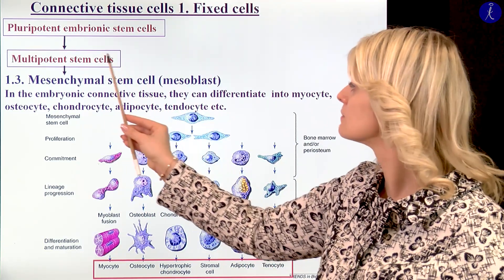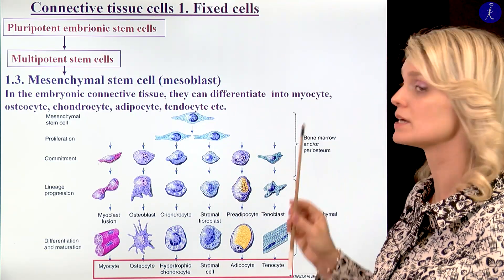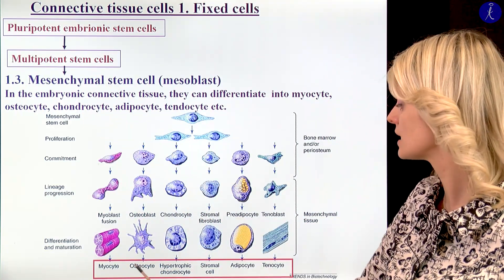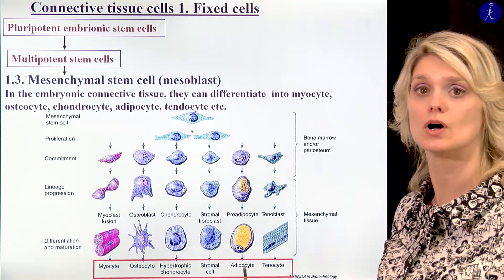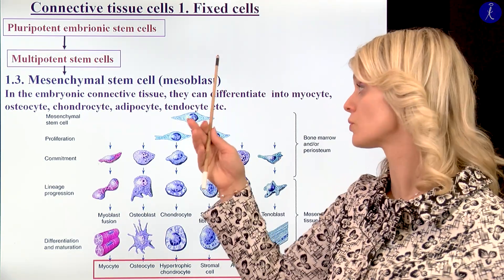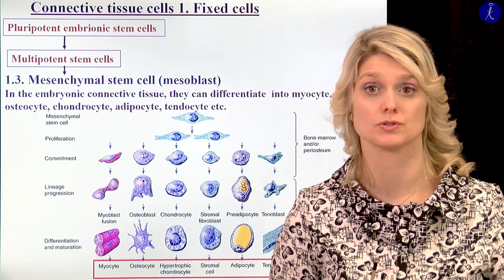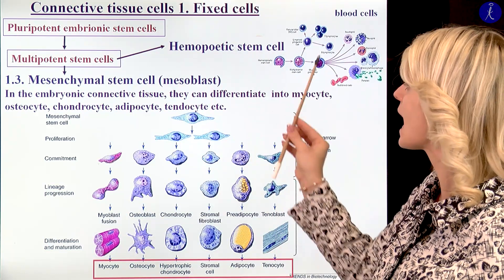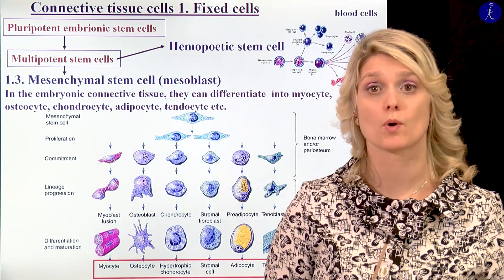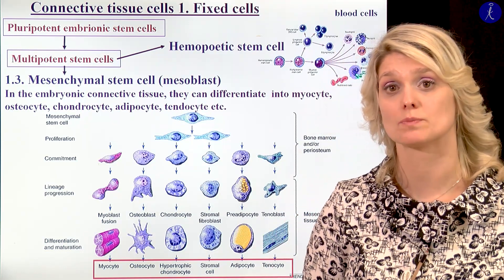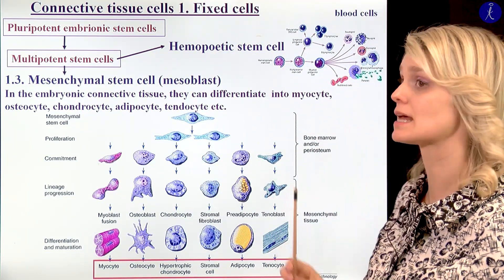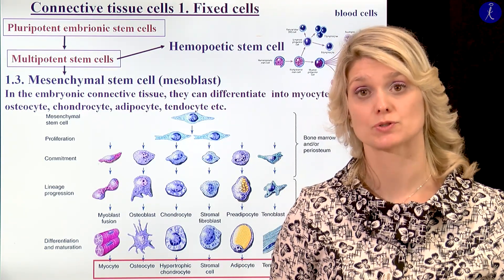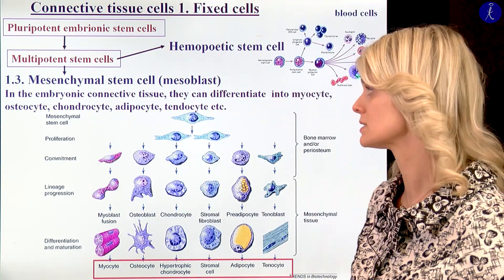From the mesenchymal stem cells, we will differentiate the myocytes, the osteocytes, the chondrocytes, the adipocytes, the tenocytes — the cells of the connective tissue, and also the muscle tissue. But we have to talk about another multipotent stem cell group: the hemopoietic stem cells. From the hemopoietic stem cells, we will develop the different white blood cells, red blood cells, and also the platelets. You have a separated lecture about the hematopoiesis where you will see details about this procedure.